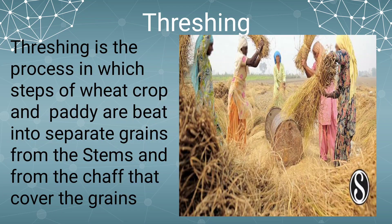The second method is threshing. Generally, our farmers use this method to separate wheat or paddy from the bundles of stalks. In this process, the stalks are beaten to free the grain seeds.